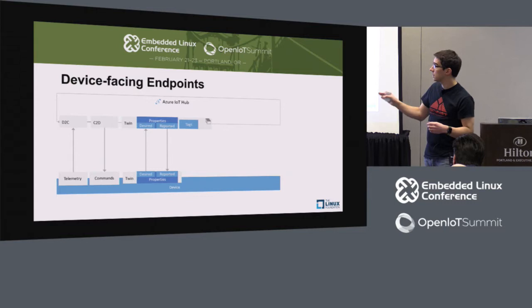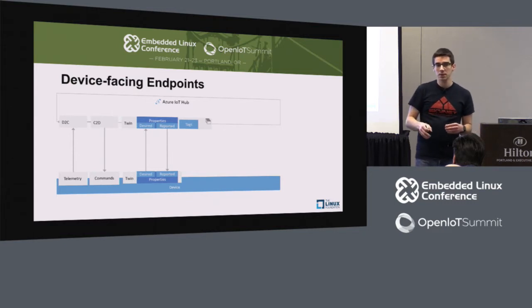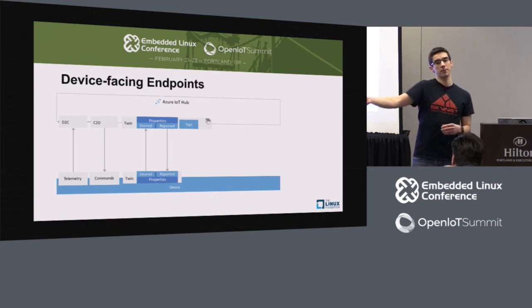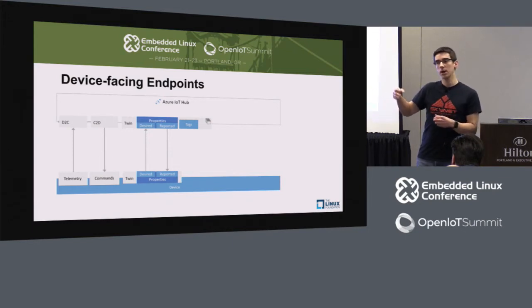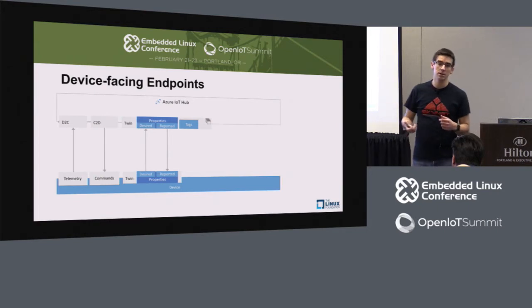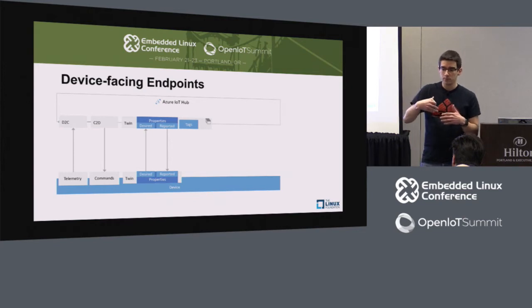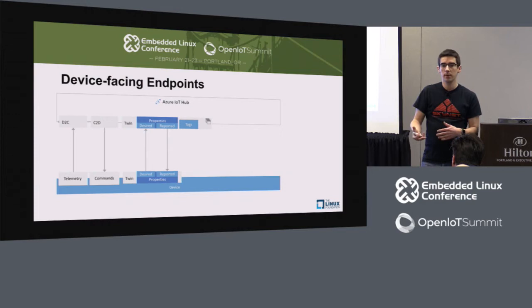The other nice thing you can do with twins is run queries. For example, you want to find all temperature sensors — you can do that with tags. But then maybe you want to find all temperature sensors reporting a temperature over 50 degrees. We have a query engine; this is stored in a NoSQL database and you can just look at all your devices and find stuff about them that way.